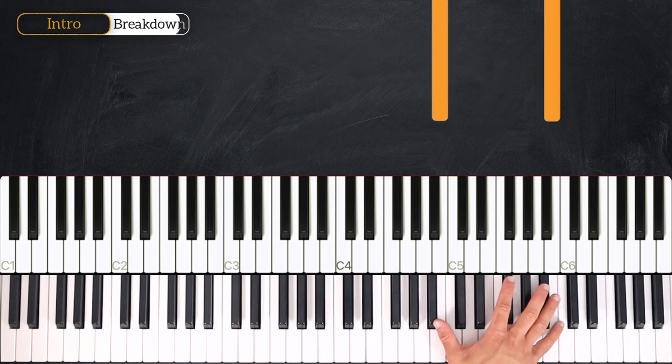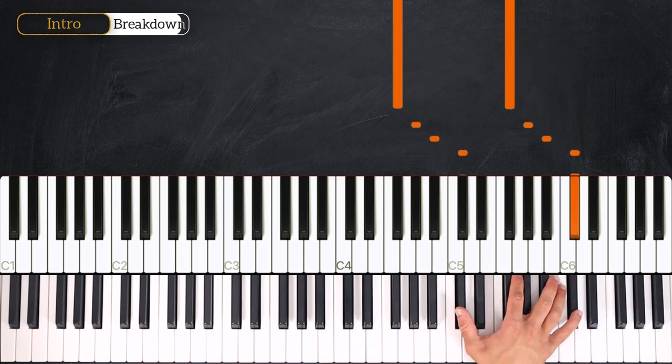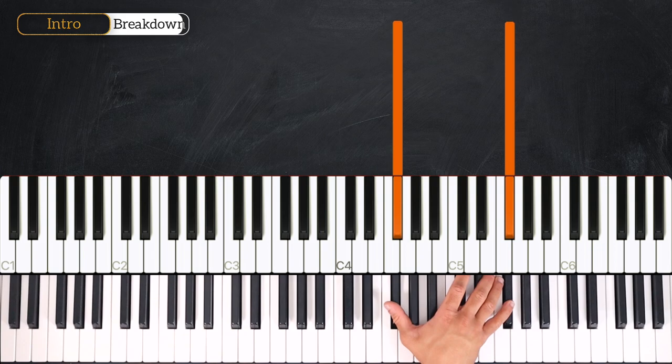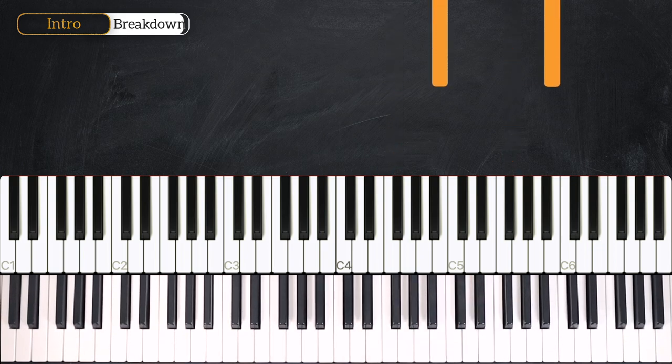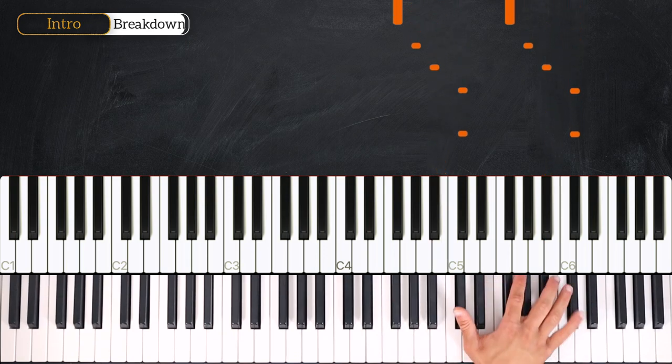Now we just have to learn the last two bars. We hold onto this G, so the last two bars go like this: C flat, D, D, B, A, G.